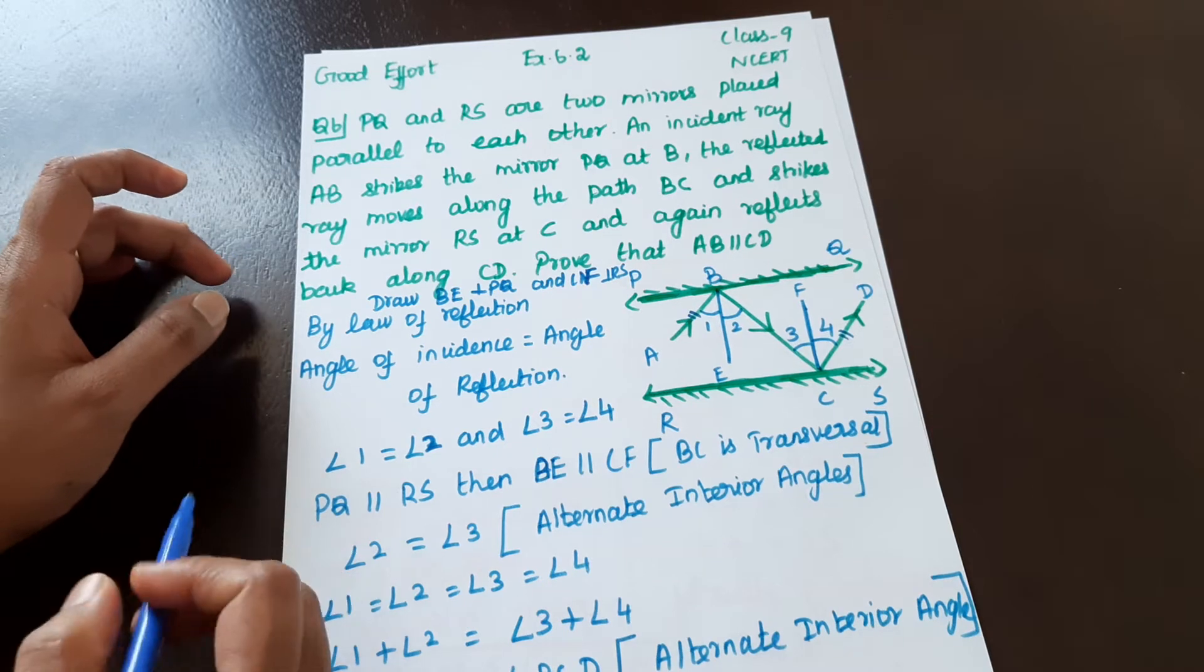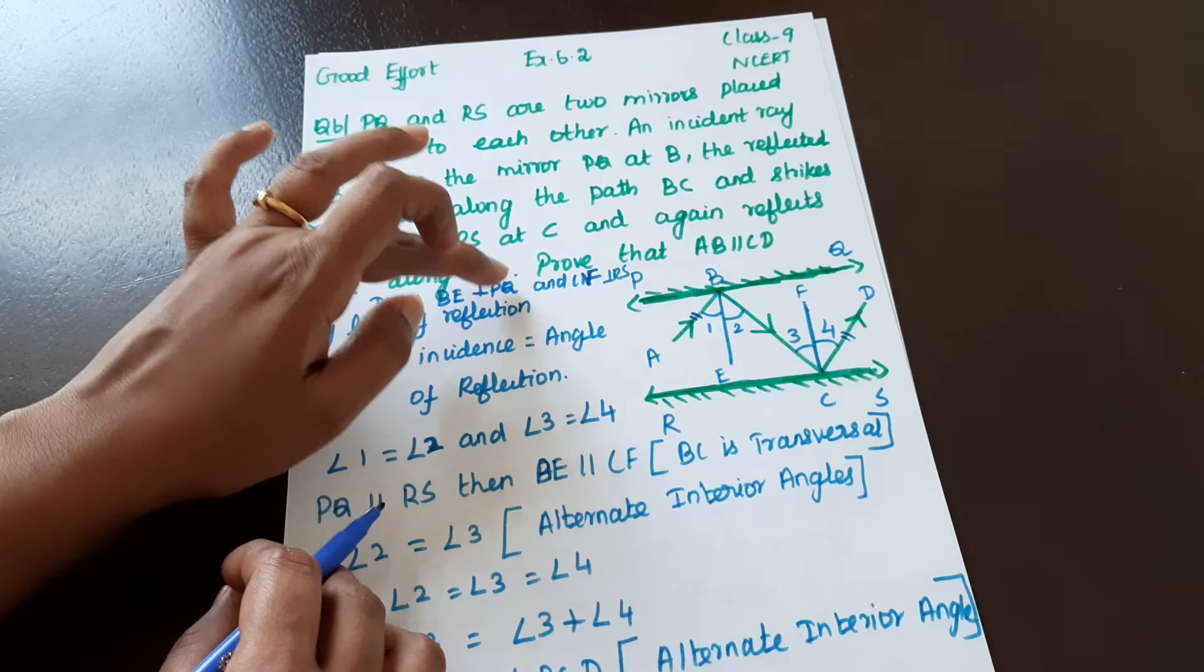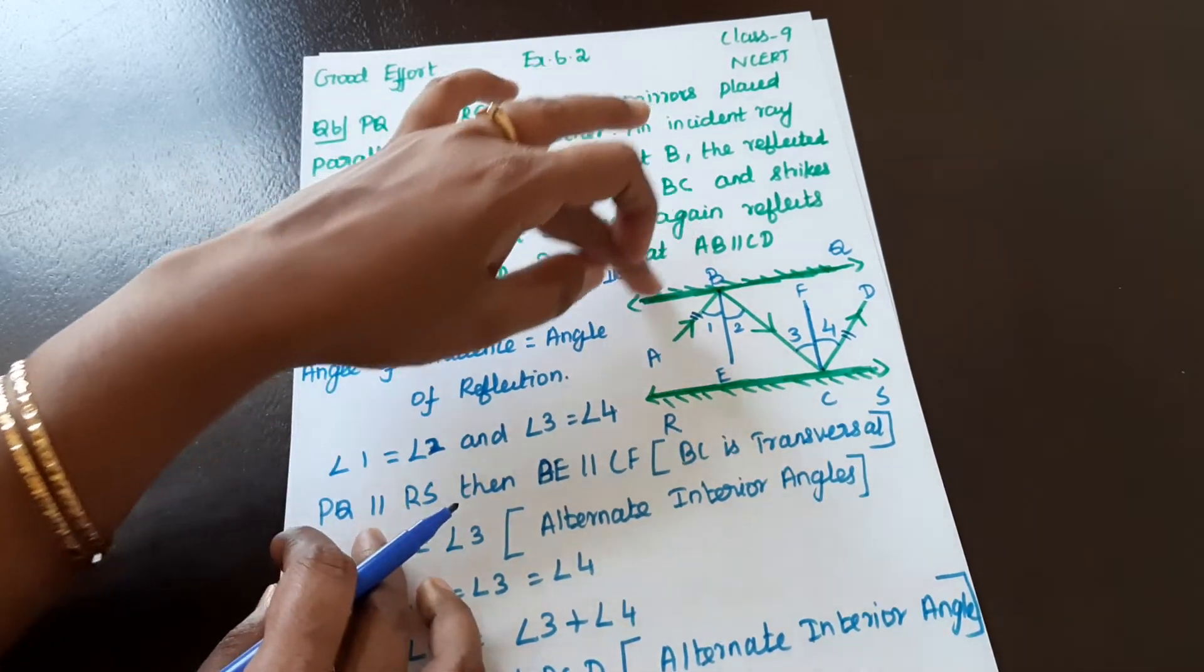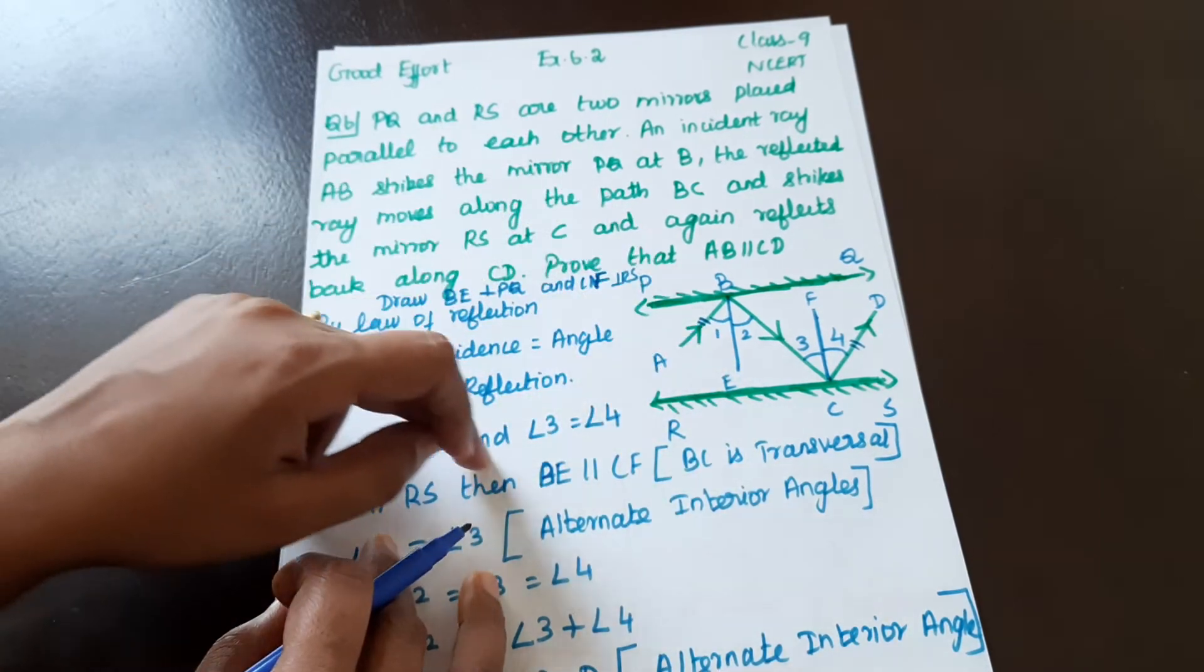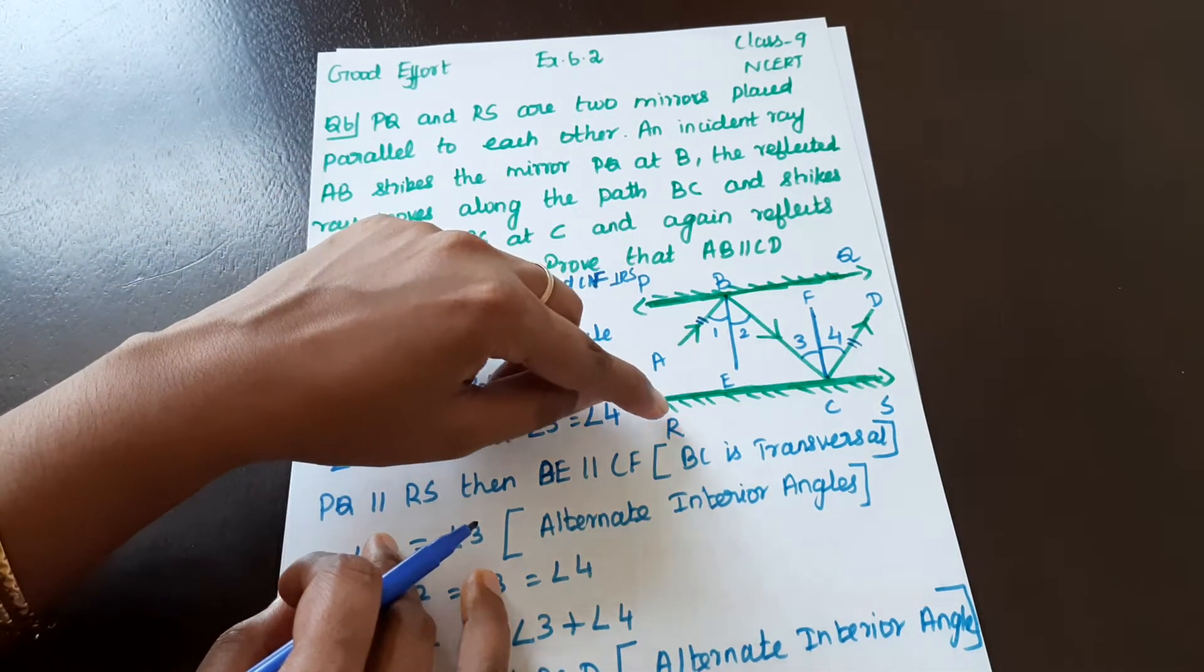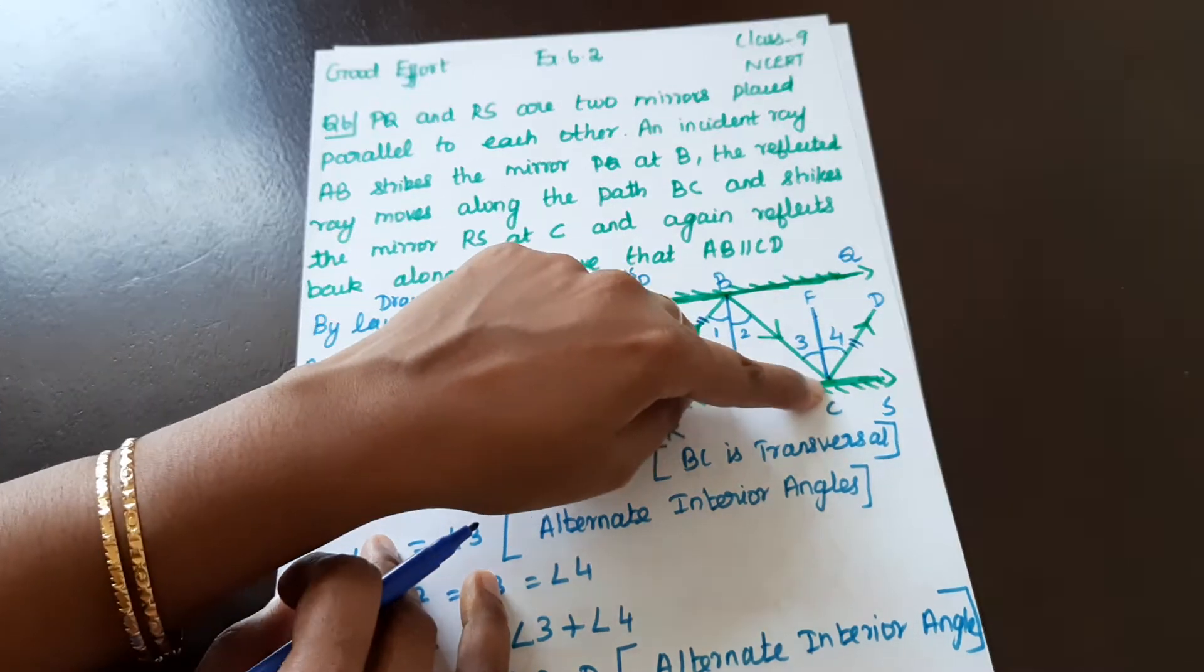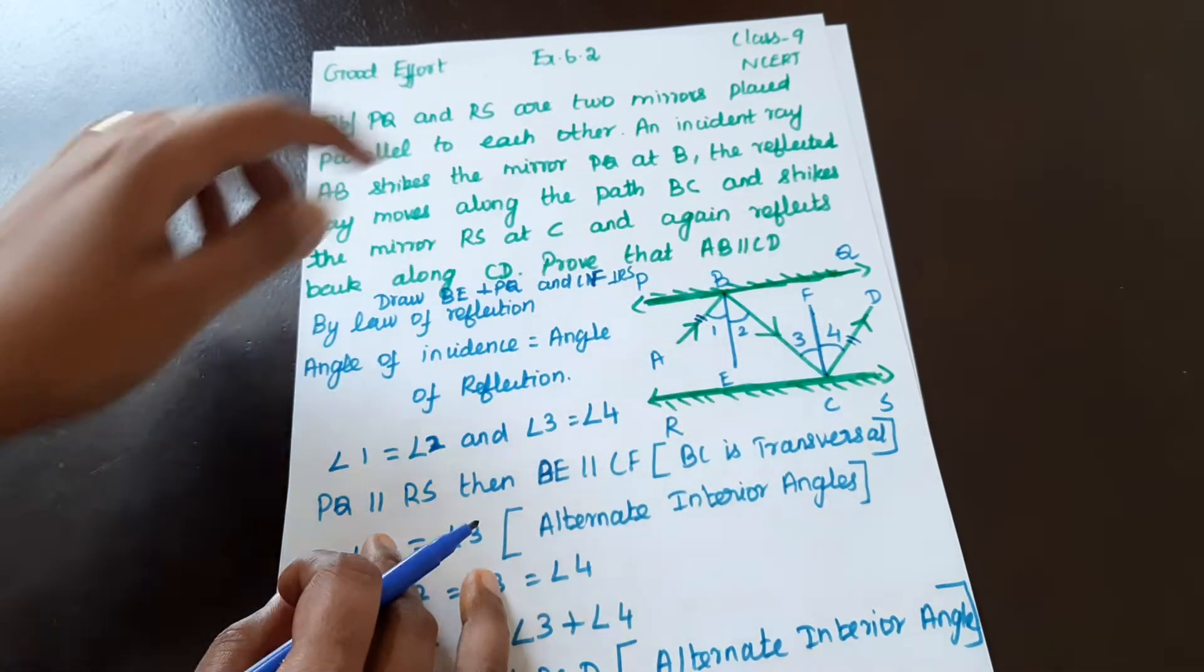First we will draw a perpendicular line. Draw BE perpendicular to PQ. Similarly, draw CF perpendicular to RS. We will draw perpendicular lines at B and C.